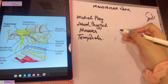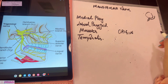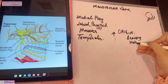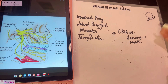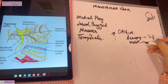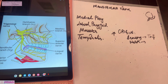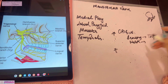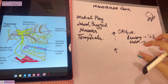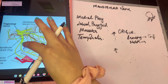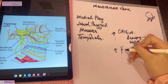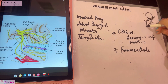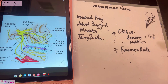Let's talk about the origin of the mandibular nerve. The first point is that its origin is from a sensory root and a motor root. The sensory root is from the trigeminal ganglion within the middle cranial fossa. The motor root emerges directly from the pons but lies deep to the trigeminal ganglion. Both roots pass through the foramen ovale to enter the infratemporal fossa, and that is where the mandibular nerve's main trunk is formed.